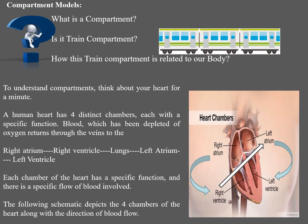Now let's move on to compartment models. What is a compartment? To understand compartments, think about your heart. A human heart has four distinct chambers, each with a specific function. Blood depleted of oxygen returns through the veins to the right atrium. From there it is pumped to the right ventricle, then to the lungs, then to the left atrium, then to the left ventricle. Each chamber of the heart has a specific function, and there is a specific flow of blood involved.